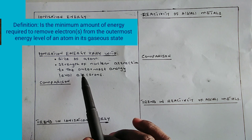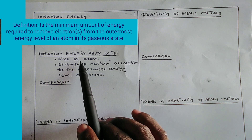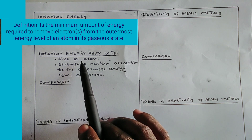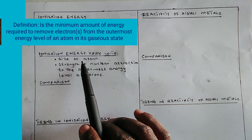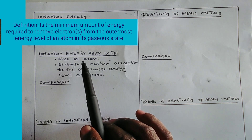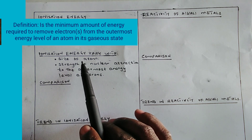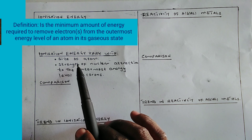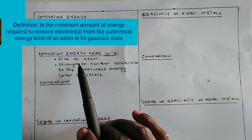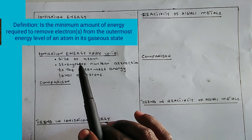When the atom is smaller, the outermost energy level electrons are strongly attracted by the nucleus and are not easily lost, so it means they require more energy to remove. When the atom is larger, the outermost energy level electron is weakly attracted by the nucleus and is easily lost, so it requires less energy to remove the electrons.